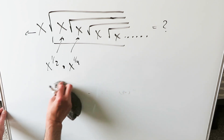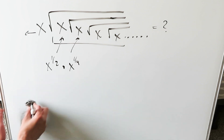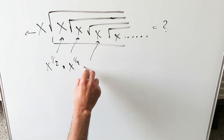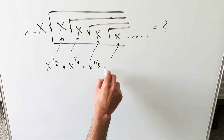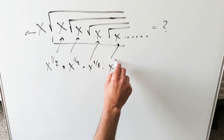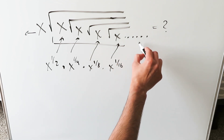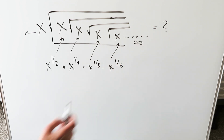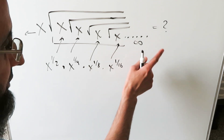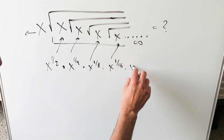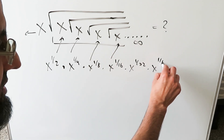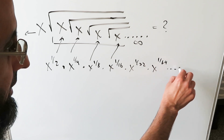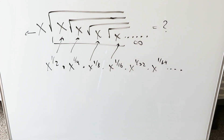Everything here divides by a factor of 2. This next one would be x to the power of 1 over 8, and then this right here would be x to the 1 over 16. We are going through an infinite number of iterations of square roots — an infinite number of embedded roots. So this would be x to the 1 over 32, then x to the 1 over 64, and on and on.